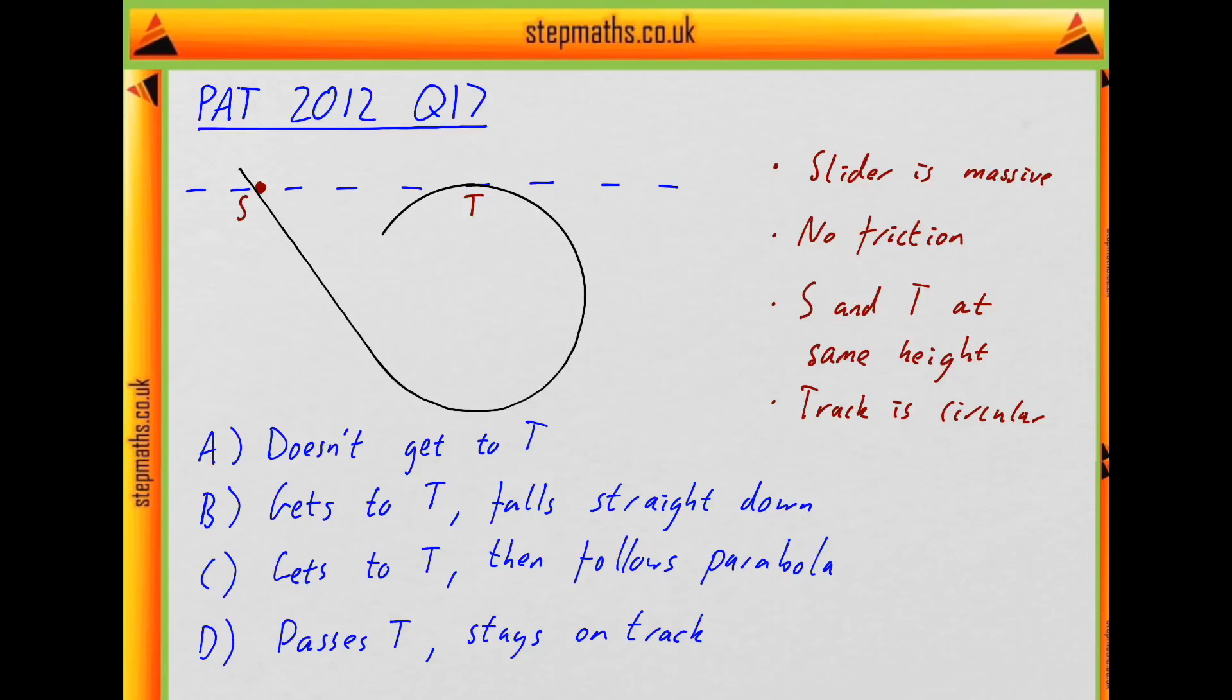OK, so there are a couple of ways to think about this, but I think a natural one is if we have a massive object moving, we're either dealing with forces or energy. And in this case, we've given a piece of information that these two points are at the same height. It isn't really relevant to the forces on the object, but it's directly relevant to the energy because that says the GPE at these two points is the same. So let's see if we can use that to help answer the question.